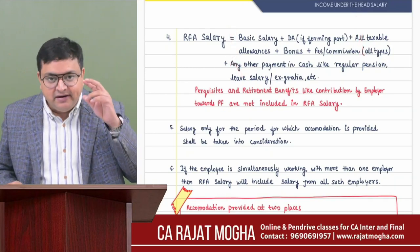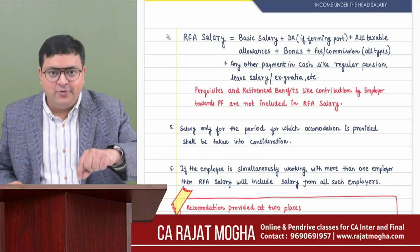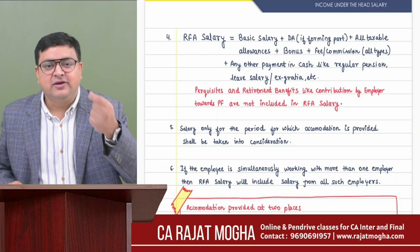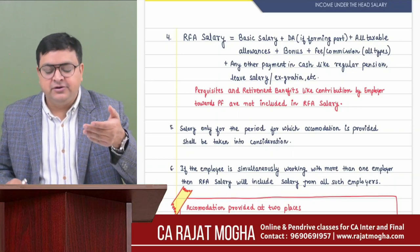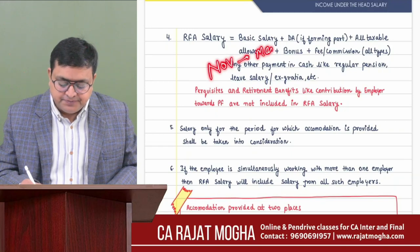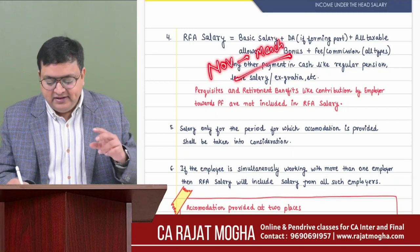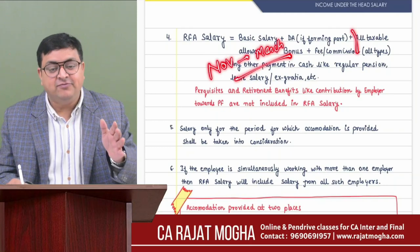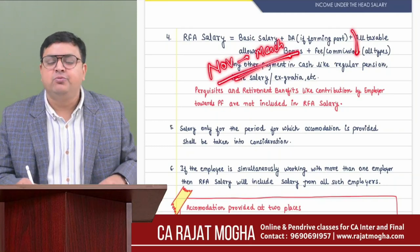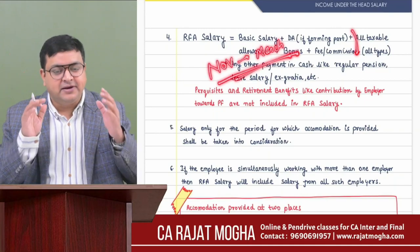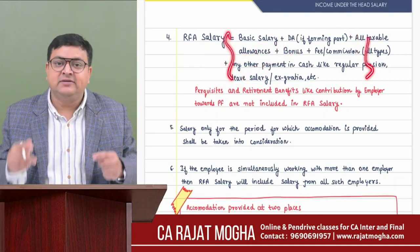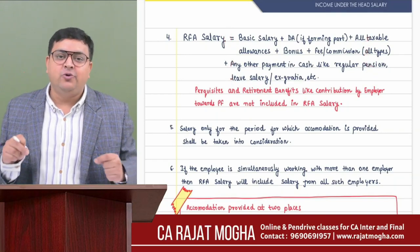For example, if rent-free accommodation is provided from November to March (5 months), take only the salary components relating specifically to November through March. Do not include components relating to other months - only the period for which the perquisite is provided.